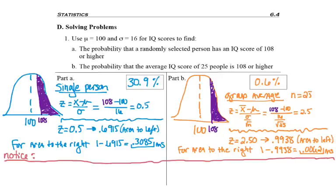This means that if I go grab one person and I check their IQ and the chance that it's 108 or higher, I've got a 30%, 31% chance, almost a third. But if I take a group of 25 people, add up all their IQs, divide by 25 people, there's only a 0.6, less than 1% chance that that average would come out to be 108 or higher. Let me try to explain this a little further.